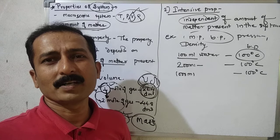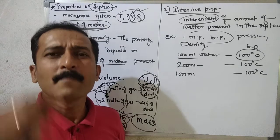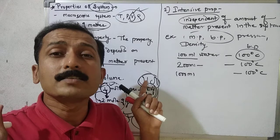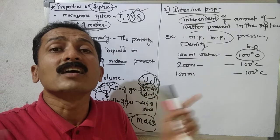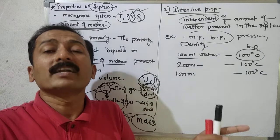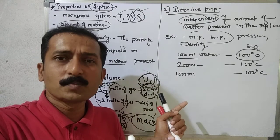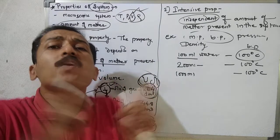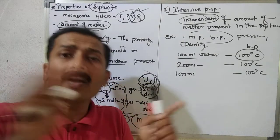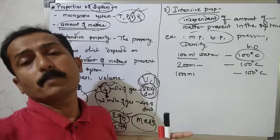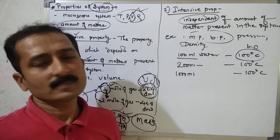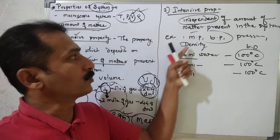This property is called intensive property — the property of the system which is independent of the amount of matter present in the system. It does not depend upon the amount or quantity of matter present in the system. That is called intensive property.